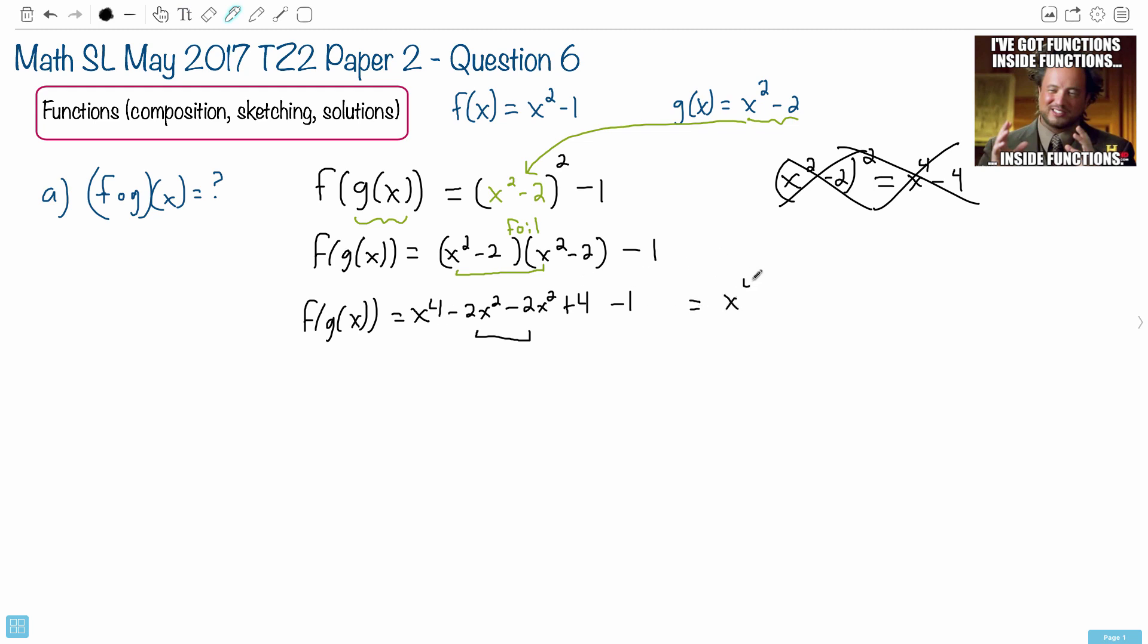I have x to the fourth, minus two x squared, minus two x squared. So that means I have minus four x squared. And then I have plus four minus one, which is plus three. So actually, this is my entire answer. I'm actually done. That's it. So this is my answer for f of g of x. And it's fully expanded.